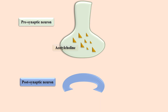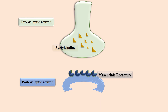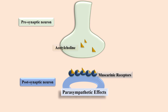So we have a presynaptic neuron and a postsynaptic neuron. The receptors for acetylcholine are present on the postsynaptic neuron, and these receptors are called muscarinic receptors. Acetylcholine releases from the presynaptic neuron and binds with its receptors on the postsynaptic neuron. This produces parasympathetic effects.